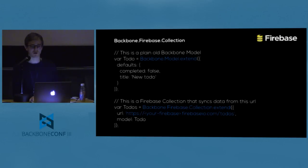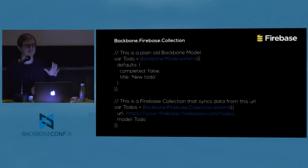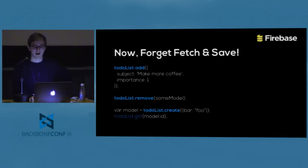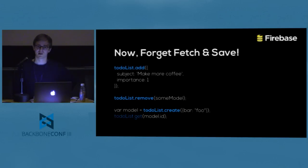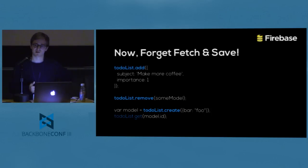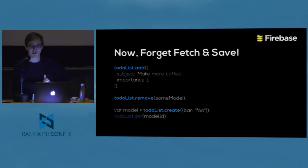One little thing: when you use a real-time collection, you need to keep Backbone models as standard Backbone models — you don't have to mix real-time Backbone models and real-time collections. The good thing is you can now forget about fetch or save, because it doesn't make sense anymore. As soon as you call add or create, it's automatically persisted. It instantly triggers locally, and then it persists to the server. As an option you can decide to wait for the server response to trigger locally, but otherwise everything triggers instantly.